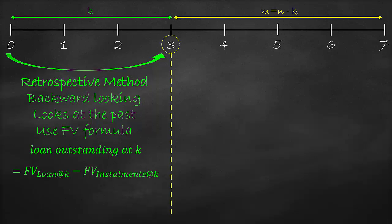The present value of the remaining unpaid installments is equal to the loan amount multiplied by (1 + interest rate) to the power of the number of paid periods, minus the periodic installment multiplied by [(1 + interest rate)^(-1) - 1] all divided by the interest rate.